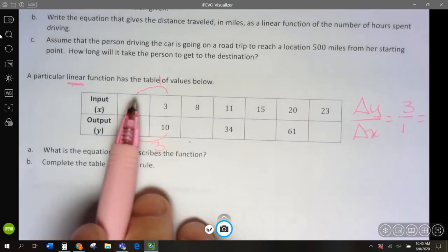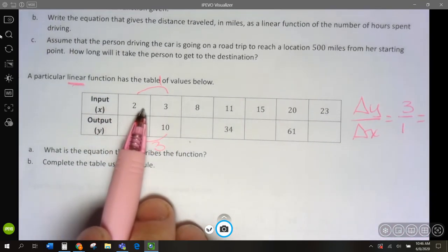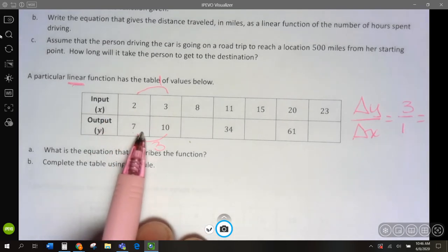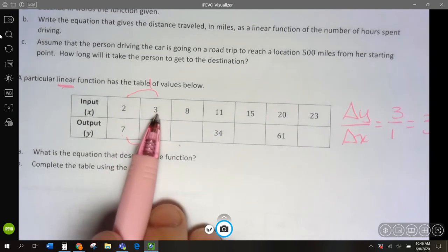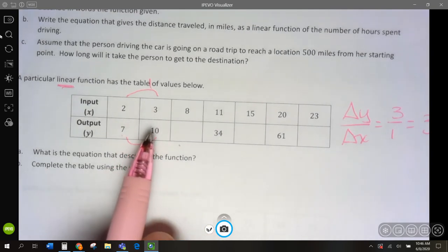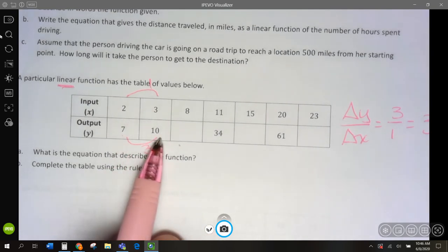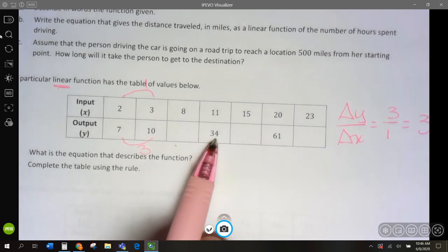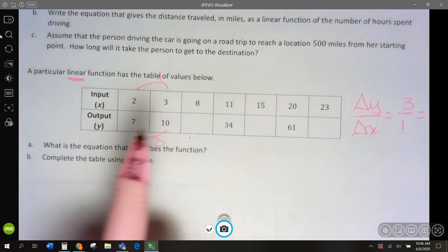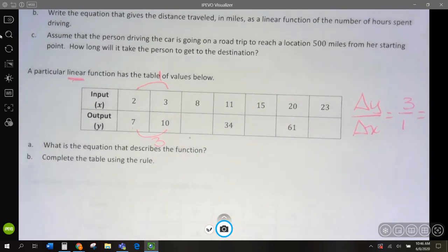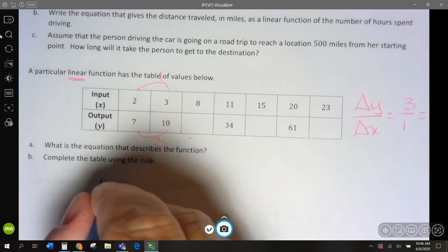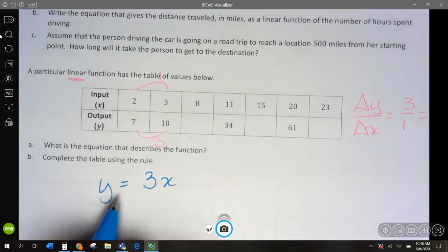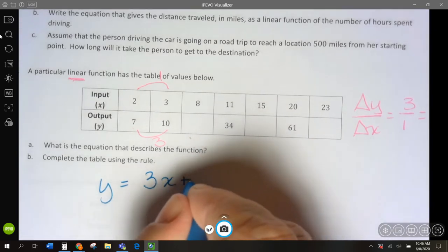So, we're going to want to take our x and multiply it by 3. But if I go 2 times 3, I get 6. What do I need to get 7? If I go 3 times 3, I'm going to get 9, but I want to get to 10. If I go 3 times 11, I'm going to get 33, but I want 34. So, what am I doing? If I am taking my x and multiplying it by 3, but to get y, I have to do something else. I have to add one more.